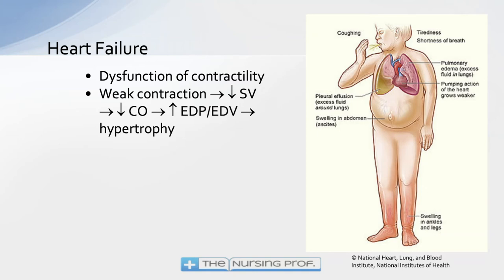Think about it like any other muscle — if you go to the gym and lift weights, the muscles hypertrophy. The same thing happens here: more stress on the heart, we're telling it to beat harder and faster, causing hypertrophy. But hypertrophy in the cardiac muscle is not a good thing because it grows bigger on the outside and on the inside. If the inside gets bigger, the amount of space for blood inside becomes smaller.